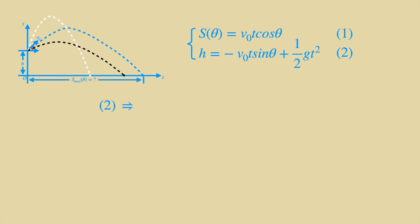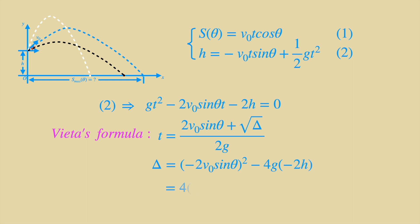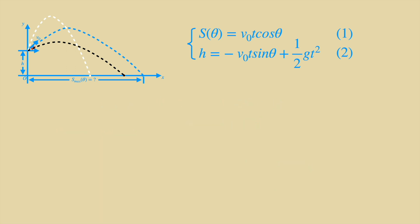We will have a quadratic equation from the second equation. At the same time, we can solve for t by using Vieta's formula, where delta equals the following complicated expression. Substitute delta in t, and substitute t in the first equation, we will have the expression of s of θ.